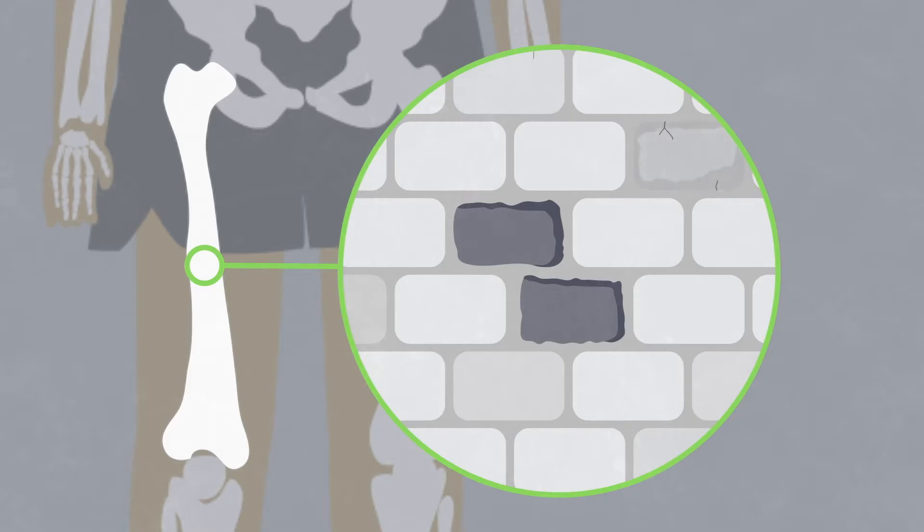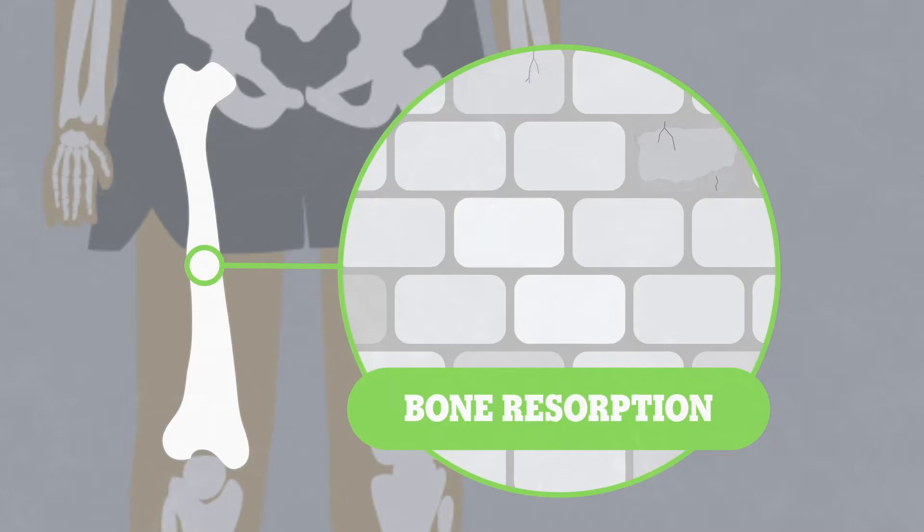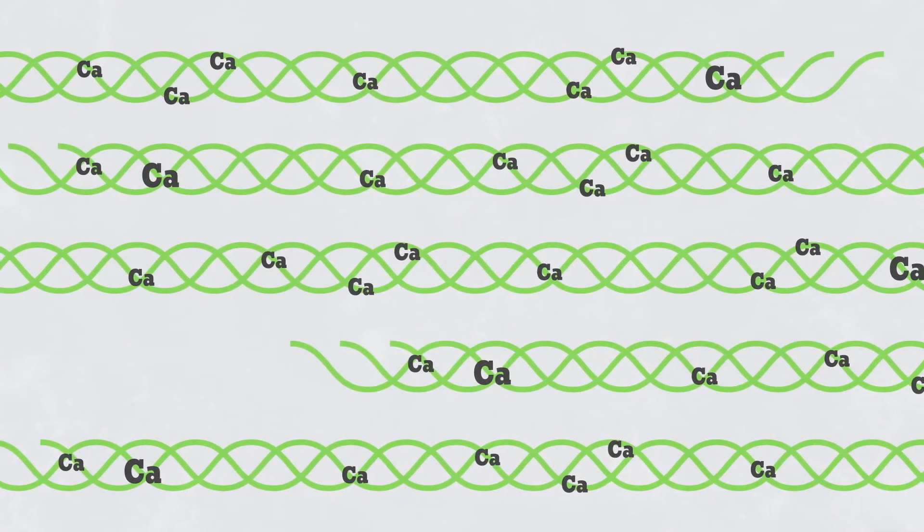The skeleton is constantly breaking down in a process called bone resorption and building up through mineralization. Calcium is the primary mineral in our bones.